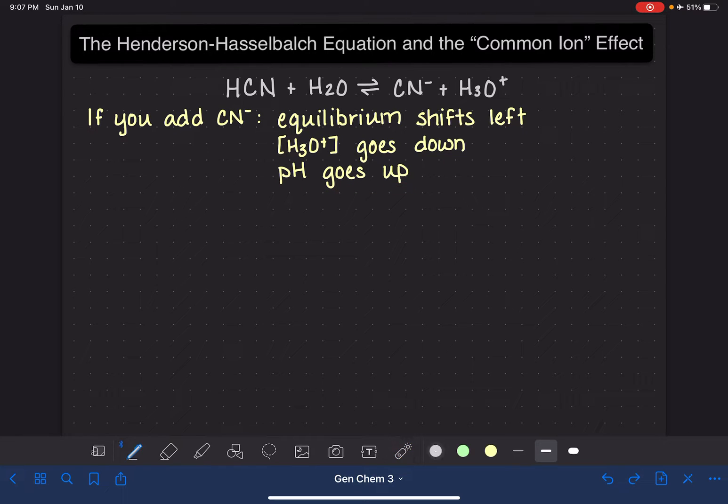We are able to pretty easily calculate the pH of this particular system if we know how much extra cyanide has been added. The equation that we will use to do this type of calculation is called the Henderson-Hasselbalch equation.